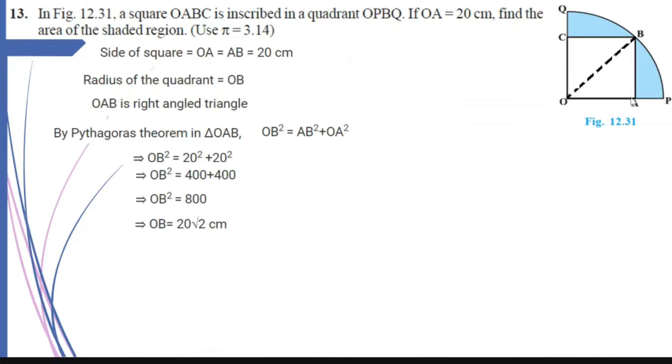So if OB is 20 root 2, that means the radius of this quadrant is 20 root 2. So I can find out the area of the quadrant. It is one-fourth of pi R squared. Now what will be the area of the quadrant?